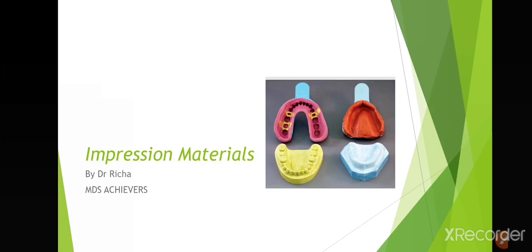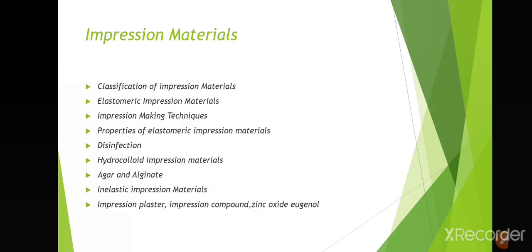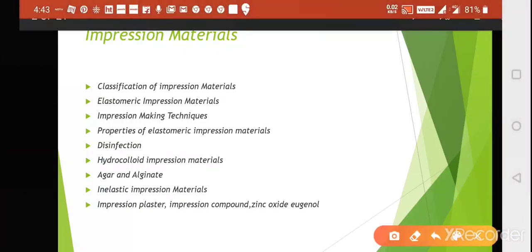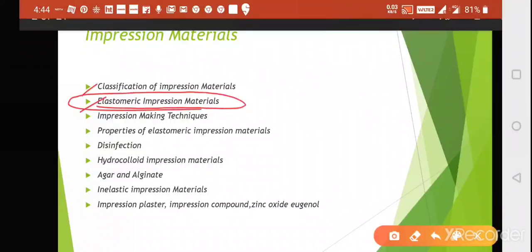I'm Dr. Richer and we'll start with impression materials. In this chapter we'll discuss the classification of impression materials — whether they are reversible or irreversible, elastic or inelastic — and then elastomeric impression materials, which includes polysulfide, polyether, addition silicone, and condensation silicone.